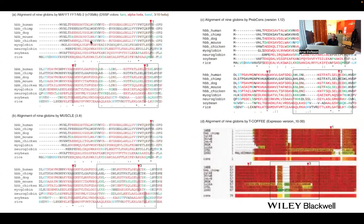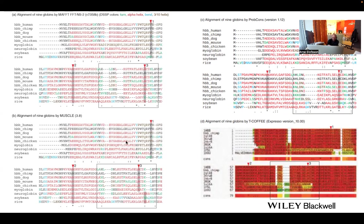Comparing to other methods: MAFFT also conserves the histidines but moves the gaps around slightly — soybean's four gaps in one place become split into one plus three elsewhere. MUSCLE also does iterative refinement but has a problem here: to reduce gaps it shifts the conserved histidine to another position, which functionally probably doesn't make sense.